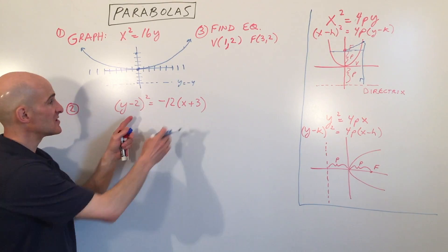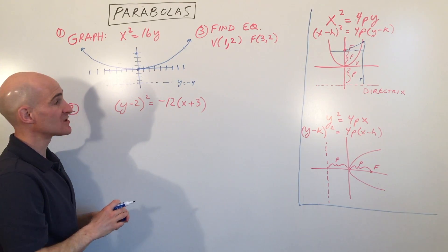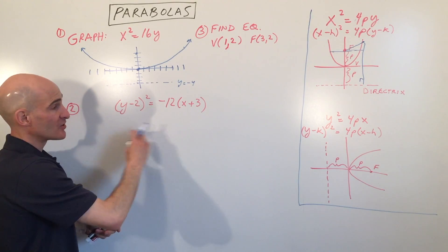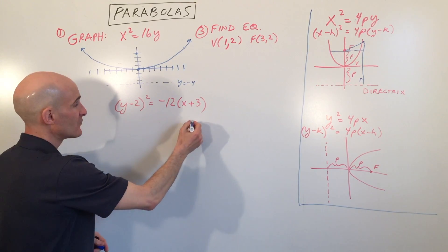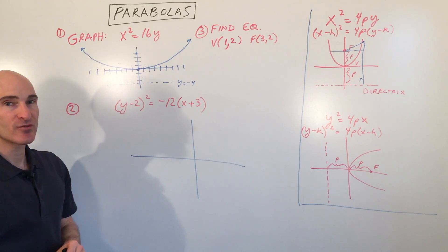Let's go to the next one. This one here is a little bit more challenging. You can see this one's been shifted, and it's a y² type, which means it's going to be opening right or left. But because this value is negative, it's going to be opening to the left.